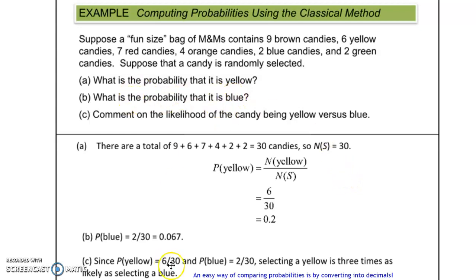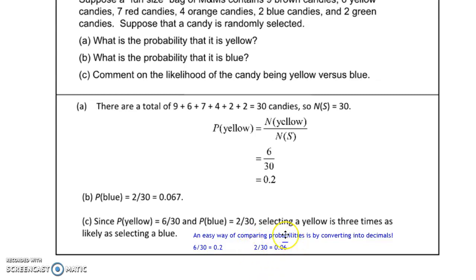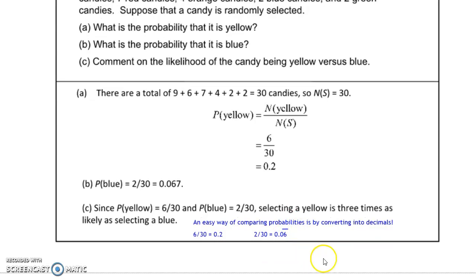The probability that it is blue is very similar: 2 blues divided by 30 total, which is approximately 0.067. We're able to compare probabilities by converting them to decimals — 6 divided by 30 is 0.2, while 2 divided by 30 is 0.06 repeating. The repeating bar indicates that this probability is less likely to occur because this number is smaller.